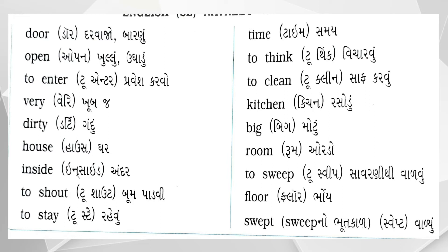Room — R-O-O-M — Room, એટલે ઓળ. To sweep — T-O-S-W-E-E-P — To sweep, એટલે વાળવું. Floor — F-L-O-O-R — Floor, એટલે જમીન. Swept — S-W-E-P-T — Swept, to sweep નું ભૂતકાળ રૂપ, એટલે વાળ્યું.